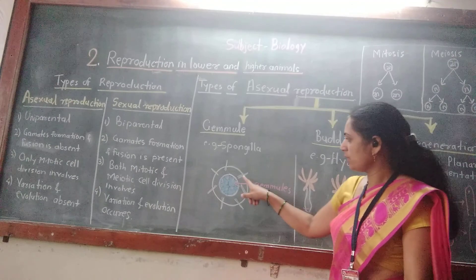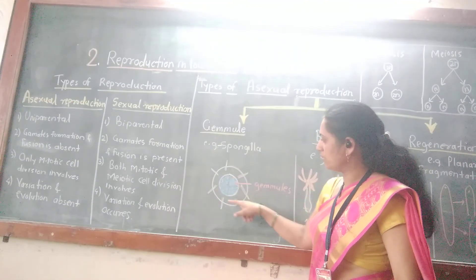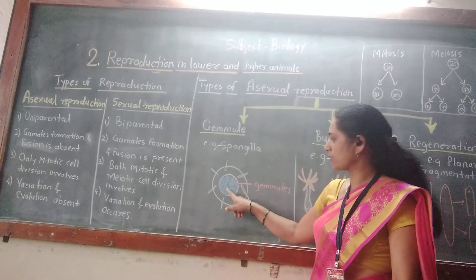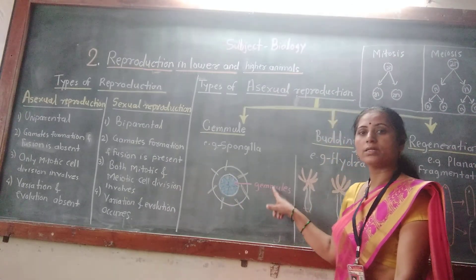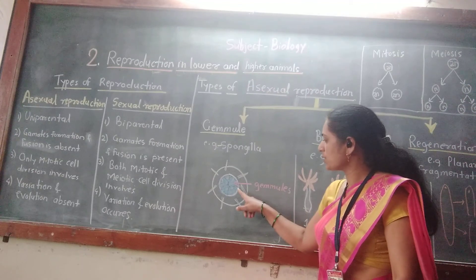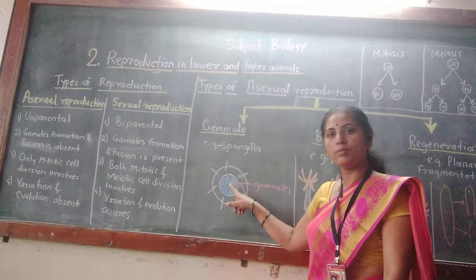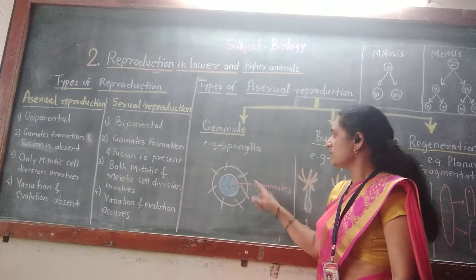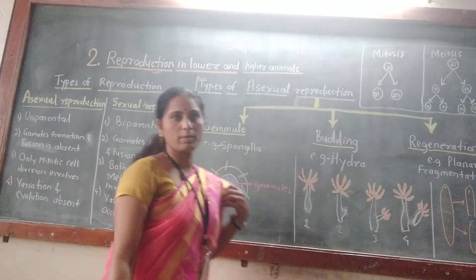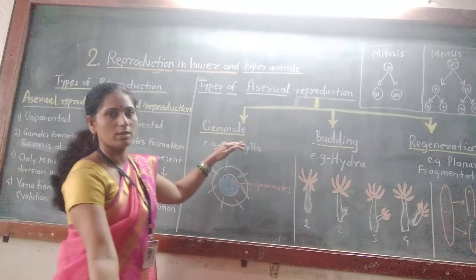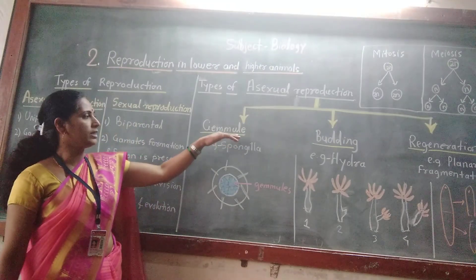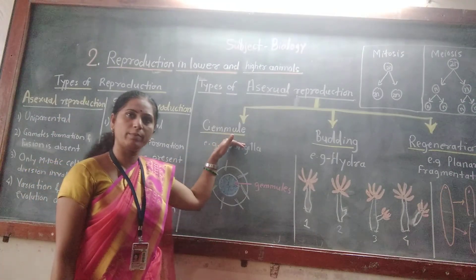This diagram shows the structure of Spongilla. Here, there is an outer membrane and an inner membrane. Inside the inner membrane, there are gemmules. These gemmules are a mass of dormant cells or archaeocytes, which are externally covered by amoebocyte cells to form a gemmule. Such gemmules form only during unfavourable conditions — that is, when appropriate water or temperature is not present.